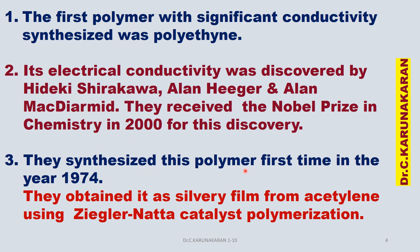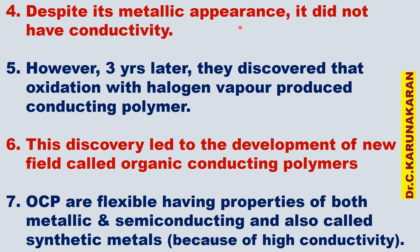They first synthesized this polymer in the year 1974, obtaining polyacetylene as a silvery metallic film from acetylene using Ziegler-Natta catalyst polymerization. Although it has metallic appearance, polyacetylene did not have conductivity initially. Later, after three years, they found that on oxidation with halogen vapor — using an oxidizing agent — the pi electrons are oxidized to produce a highly conducting polymer. This discovery further led to the development and synthesis of many organic conducting polymers.